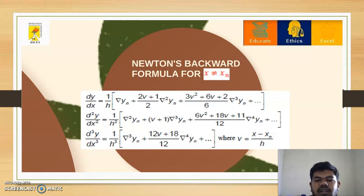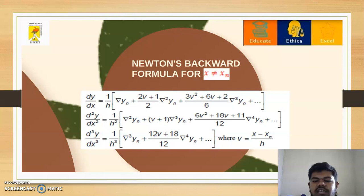Newton's backward formula for x not equal to xn: the first derivative becomes dy/dx = (1/h) [∇yₙ + ((2v+1)/2)∇²yₙ + ((3v² + 6v + 2)/6)∇³yₙ + ...]. The second derivative becomes d²y/dx² = (1/h²) [∇²yₙ + (v+1)∇³yₙ + ((6v² + 18v + 11)/12)∇⁴yₙ + ...]. The third derivative becomes d³y/dx³ = (1/h³) [∇³yₙ + ((12v + 18v)/12)∇⁴yₙ + ...]. Here, v is defined by the formula v = (x - xₙ)/h.